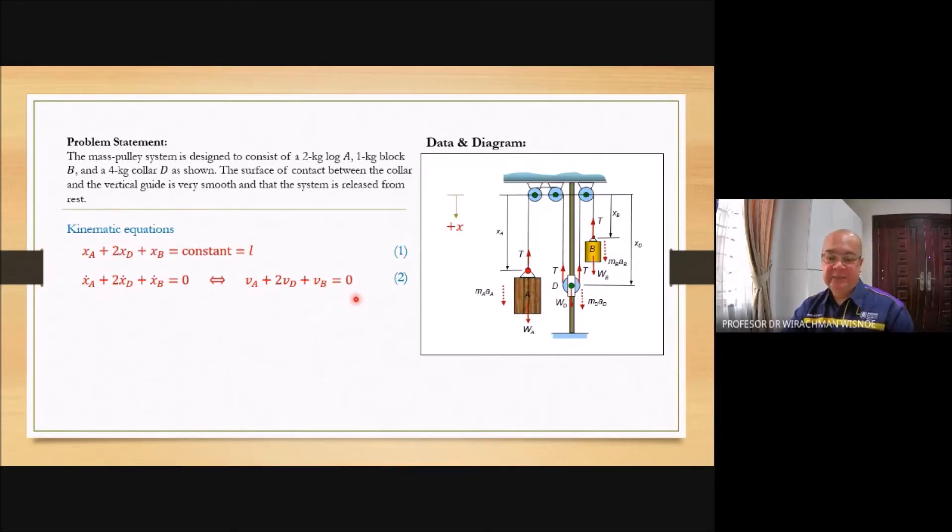You differentiate again this one. You are going to have XA double dot plus 2XD double dot plus XB double dot equals to zero. And you know that in the rectangular coordinate, double dot means differentiate two times with respect to time. That is acceleration.